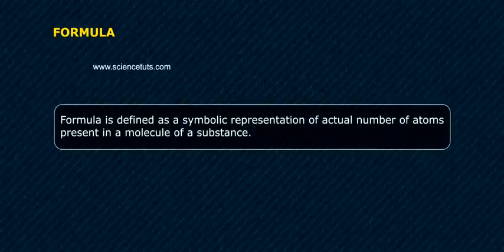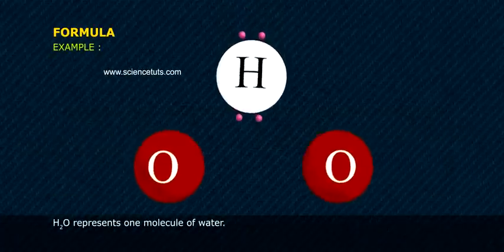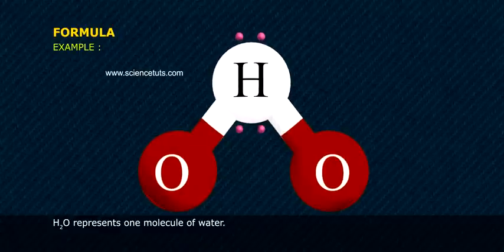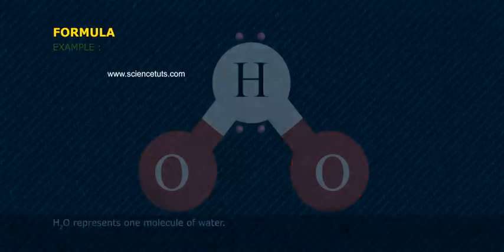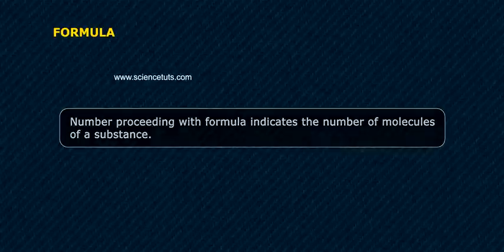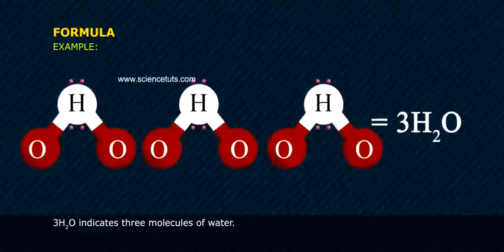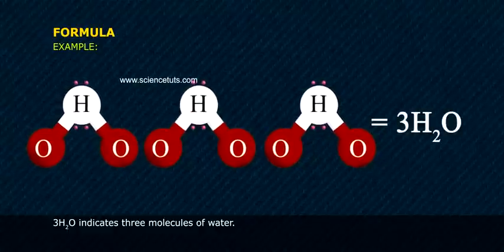Formula is defined as a symbolic representation of the actual number of atoms present in a molecule of a substance. Example: H2O represents 1 molecule of water. A number preceding the formula indicates the number of molecules of a substance. Example: 3H2O indicates 3 molecules of water.